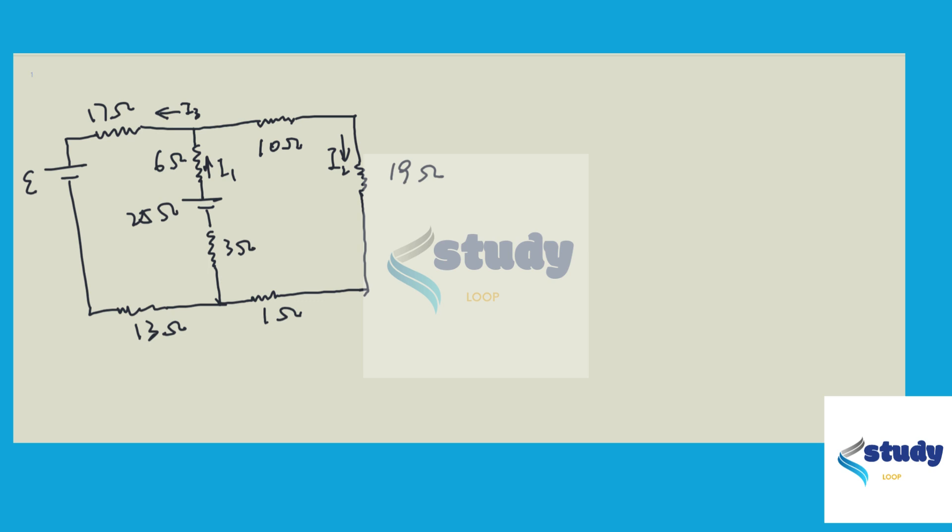And I2 is the current on the right going down here. I3 is the current on the left also going down this direction.